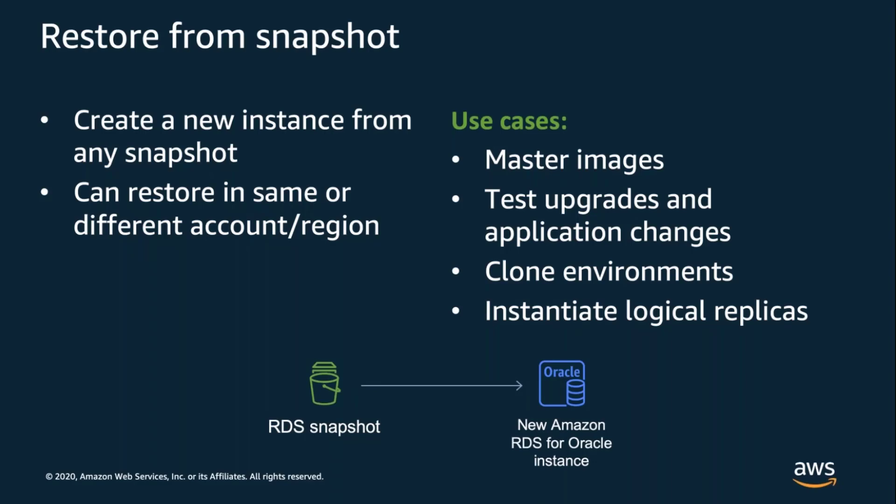Because snapshots can be copied to other regions and accounts, they can also be part of your DR strategy. The RPO will depend on how frequently you take snapshots and how long it takes them to copy to other regions — more frequent snapshots will reduce your RPO, but it will probably still be measured in hours with this solution. RTO would be the time it takes to restore a snapshot as a new instance, verify the configuration, and make it available for your applications. RDS makes this very easy to test — a few clicks in the console or a single API call will create your new instance from the snapshot.